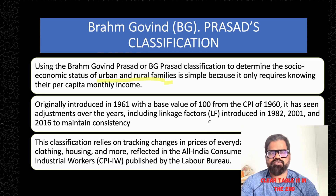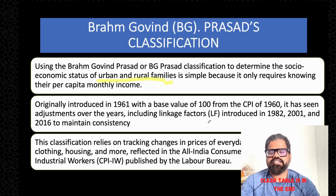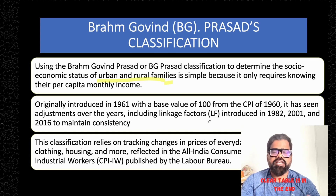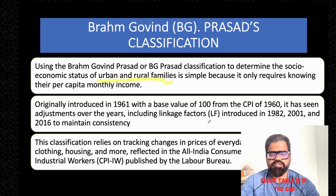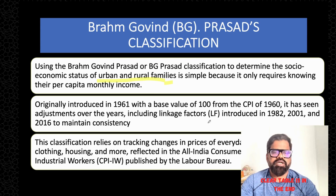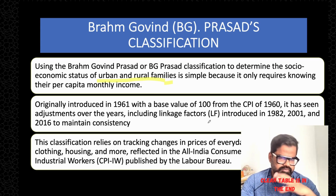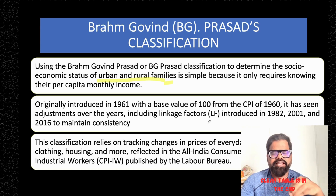Over the years, prices of goods and commodities increase on a regular basis. Revisions have been done — in 1982, in 2001, and in 2016 — where certain linkage factors were included that need to be multiplied. The linkage factor for 1982 is 4.63, for 2001 is 4.93, and for 2016 is 2.88.